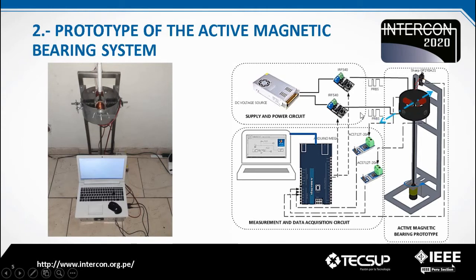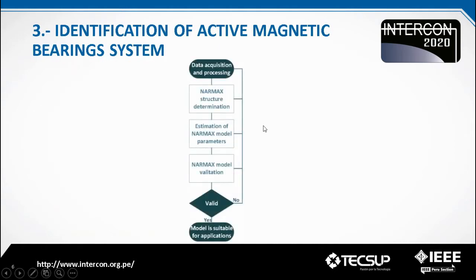The identification was done for a single axis of motion, so the data was obtained only from two electromagnets and one axis position sensor. This is the flowchart for identification of the NARMAX model, which starts with data acquisition and processing, then the structure of the model, then estimation of the coefficients or parameters, and finally the NARMAX validation is done to determine if the model is suitable for applications.